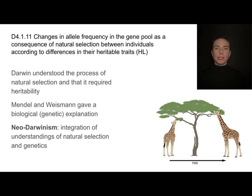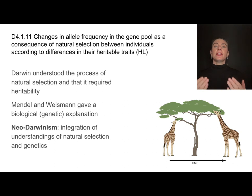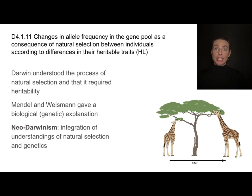One of the extraordinary parts about Darwin's thought process was that he understood natural selection must require heritability — the ability of parents to pass along information to their offspring. But the actual mechanism of heritability, things like DNA and genes, had not been completely uncovered yet. It wasn't until Mendel and Weissman came along that we had a biological or genetic explanation for the natural selection mechanisms Darwin was proposing. When we combine those two, we get what's called neo-Darwinism — neo meaning new — the integration of understandings of natural selection and the science of genetics.